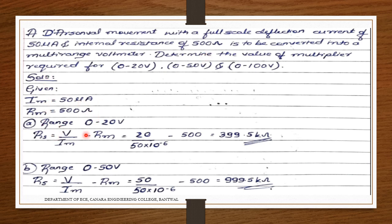The multiplier formula is: R_s = V/I_m minus R_m. For range 0–20 V: R_s1 = 20 / (50 × 10⁻⁶) minus 500 = 400,000 minus 500 = 399,500 Ω = 399.5 kΩ. For range 0–50 V: R_s2 = 50 / (50 µA) minus 500 = 1,000,000 minus 500 = 999,500 Ω ≈ 999.5 kΩ.